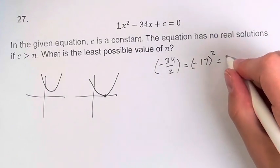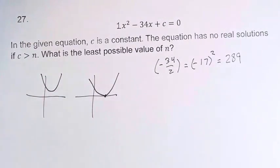This value is 289, and when c is equal to 289, the equation has exactly one real solution.